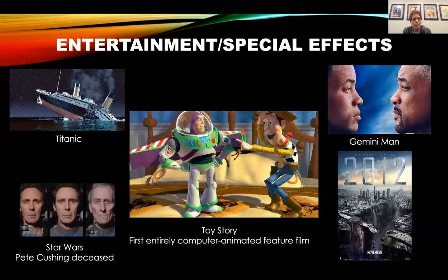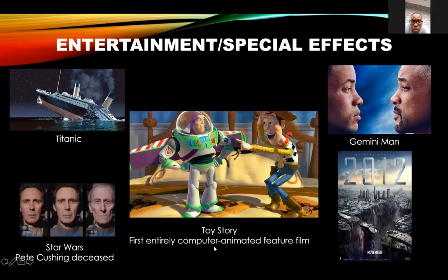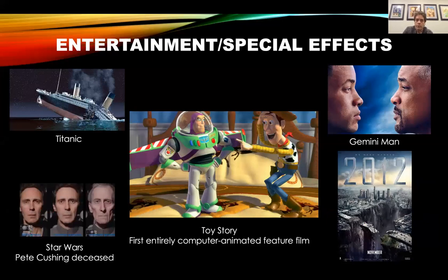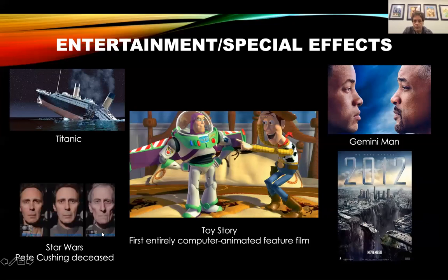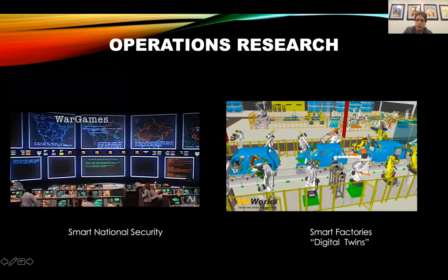This is a bit more fun — we all know about movies and special effects. In the middle was the very first entirely computer-animated film, Toy Story. I remember when I saw Titanic in the upper left — it was just like we were really there. And this one interesting one in the bottom right, Star Wars: Peter Cushing is actually deceased, but they were able to use information about him from old photos and create him in one of the most recent Star Wars movies. These are pretty good examples of what computer models can do.